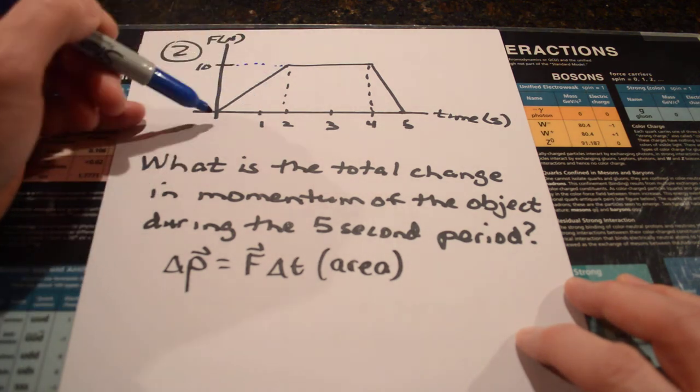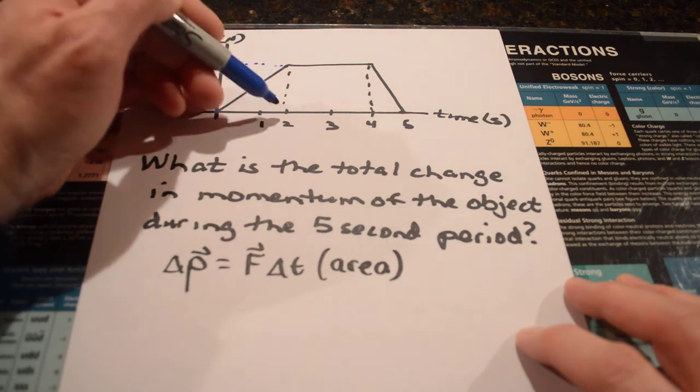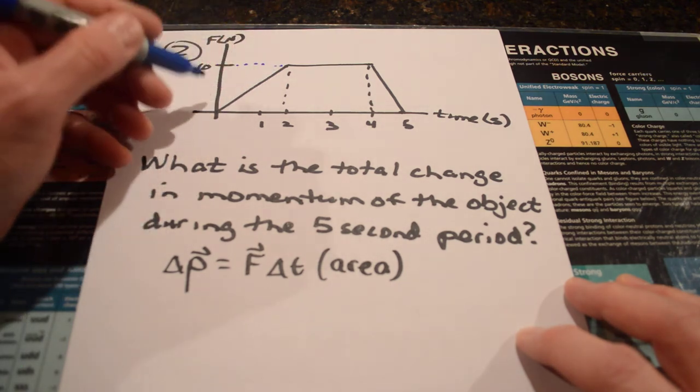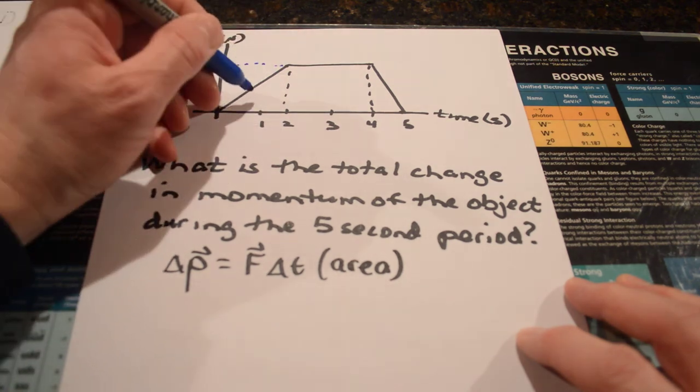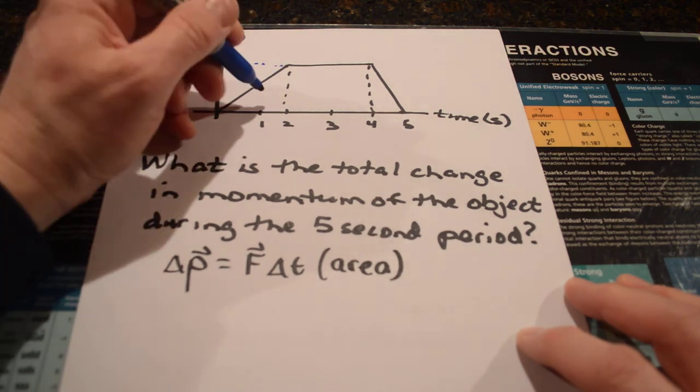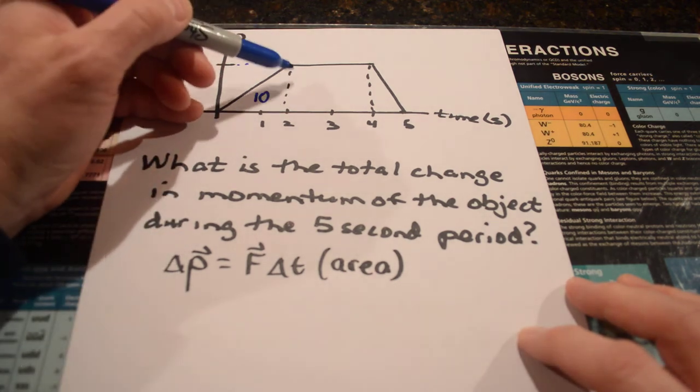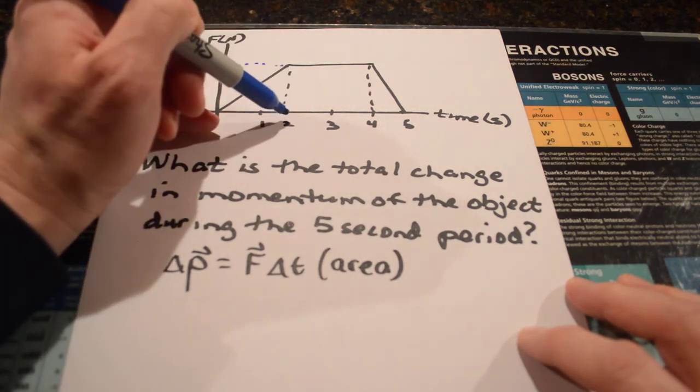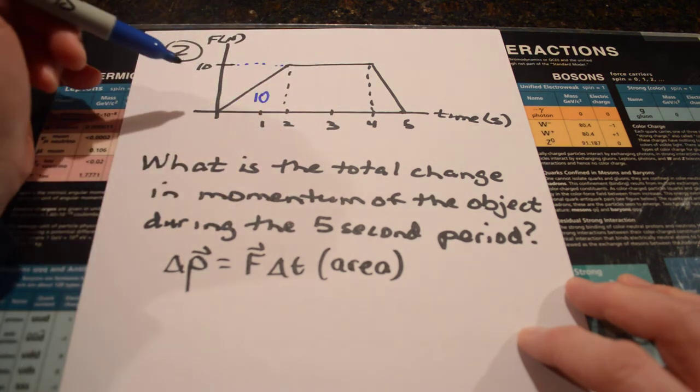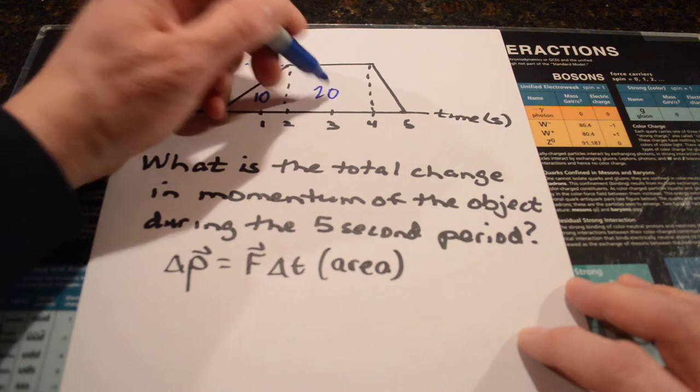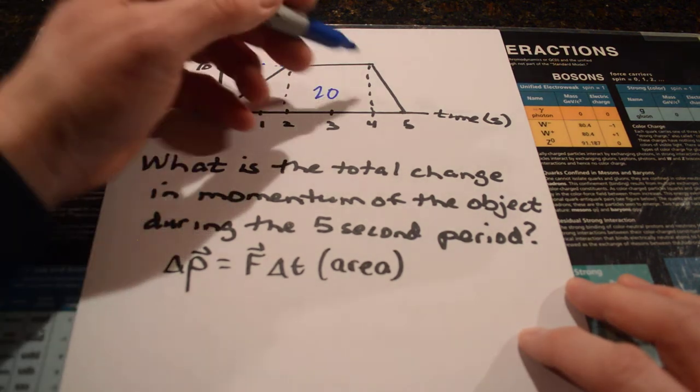Take the area of that whole rectangle, ten by two, and it's a half of that. And that's going to give you ten as the area. Take a look at the next area. That would be bounded by two and four seconds. That's two seconds times ten, so that's an area of twenty. And then here, it drops quickly in one second, the whole ten.